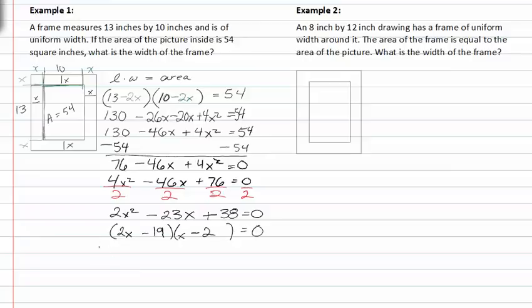Setting the factors equal to zero, we get two x minus nineteen equals zero and x minus two equals zero. Solving for x on each of these, we get x equals nineteen halves and x equals two. Nineteen halves is the same as nine point five, and that would not make sense because that dimension would be almost the same as the actual picture, and that just wouldn't work in this problem. So x equaling two is the width of the frame.